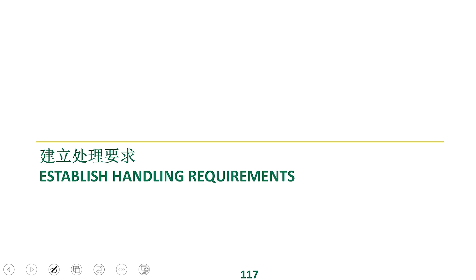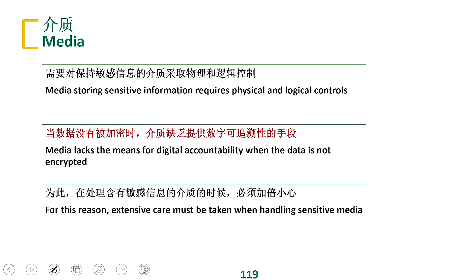Whether it is static data, data in transmission, or data in use, in the whole process of data processing we need to consider its security. This is why we need to set security requirements for the object — we need to establish security requirements for data assets. So what are the requirements for secure processing?